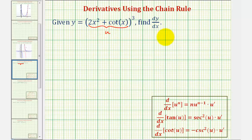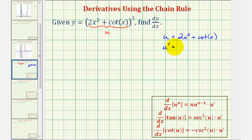To keep things organized, we have u equals two x squared plus cotangent x. We also need u prime, so let's find that now. U prime is du/dx, so u prime would be equal to four x — since the derivative of two x squared is four x — and the derivative of cotangent x is negative cosecant squared x, so we write minus cosecant squared x.